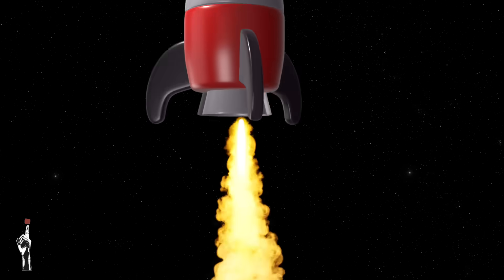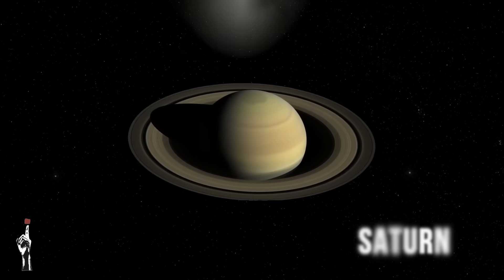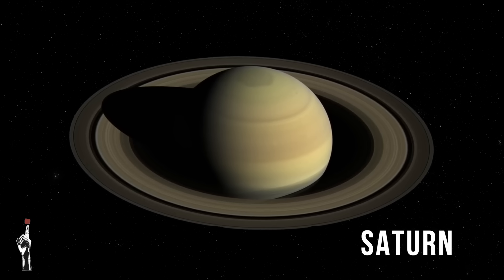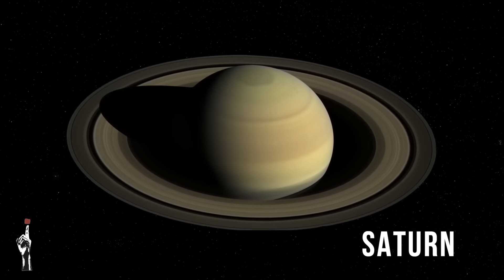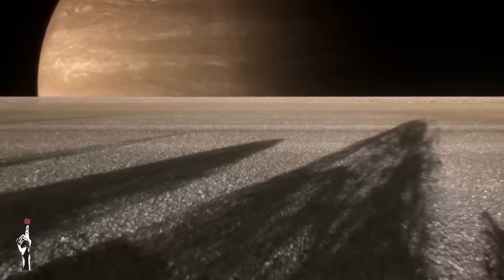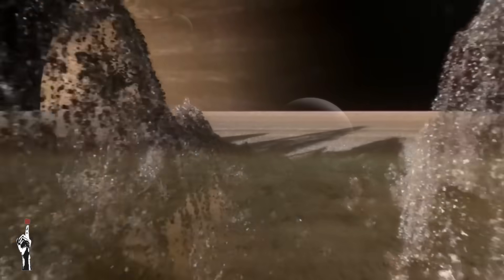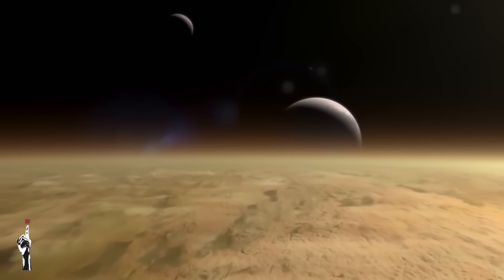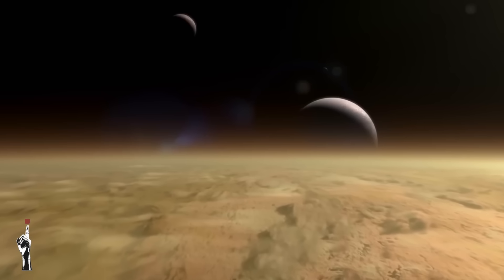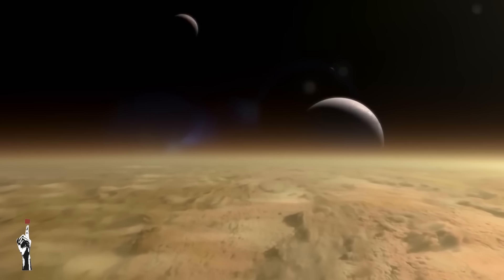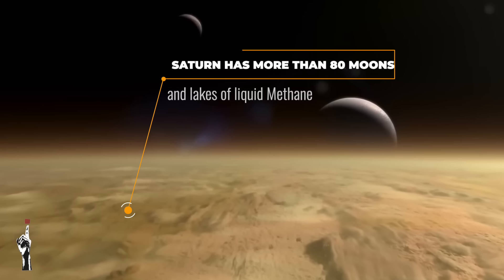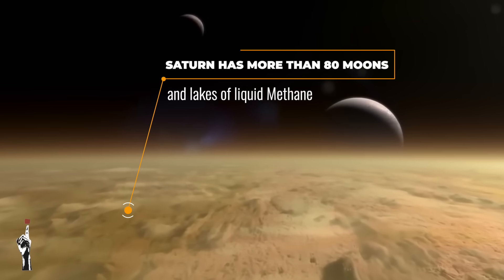Next up is the majestic planet Saturn, instantly recognizable by its beautiful, extensive rings made up of ice and rock particles ranging in size from tiny grains to house-sized chunks. Although Saturn is a gas giant like Jupiter, it is less dense — so much so that if there were an ocean large enough, Saturn would float in it. Saturn also has more than 80 moons and has lakes of liquid methane.